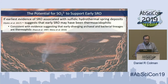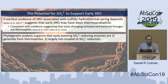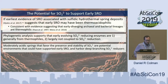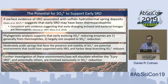If in fact the earliest evidence for SRO is associated with sulfitic hydrothermal spring deposits as some recent evidence suggests, then these early SRO may have actually been thermophilic — which is consistent with a lot of other evidence suggesting that early diverging archaeal and bacterial lineages are in fact thermophilic. The phylogenetic analyses support that these early sulfite-reducing enzymes are generally from thermophiles and largely not coupled to sulfate reduction in the earliest homologs we know about. It's possible that these moderately acidic springs that favor the presence and stability of sulfite are environments that could have supported early SRO and these deeper-branching sulfite reducers, though certainly lots of further investigation is needed of both these environments and these taxa.